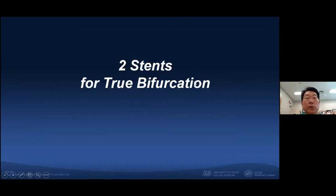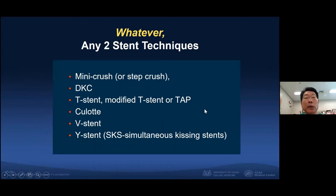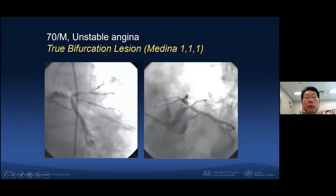The second scenario is two-stent technique for true bifurcations. Whatever technique you choose — mini crush, DK crush, T-stent, Culotte, V-stent, Y-stent — we don't have data showing different clinical outcomes according to different two-stent techniques.